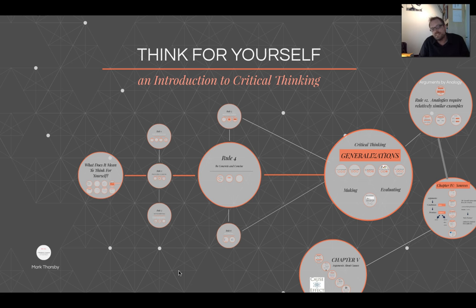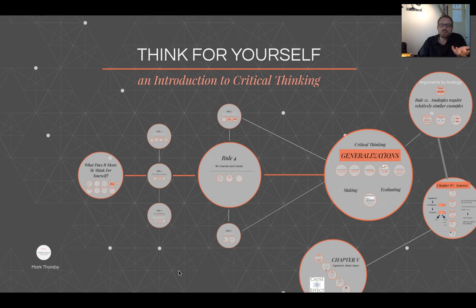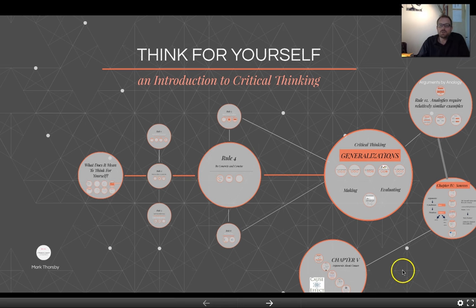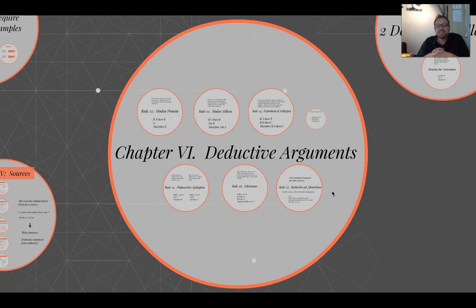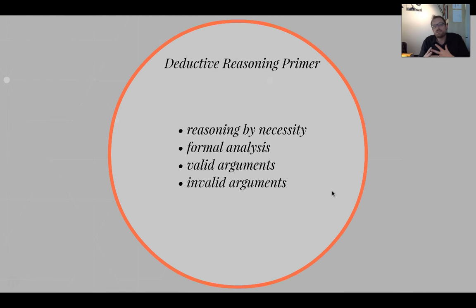The distinction we've been looking at is the difference between analyzing other people's arguments as well as making your own arguments. Hopefully these rules are going to help you. What we're going to be taking a look at today is Chapter 6, Deductive Arguments. We talked about the distinction between deductive reasoning previously, so let me start off and give you what I'm calling here a deductive reasoning primer.